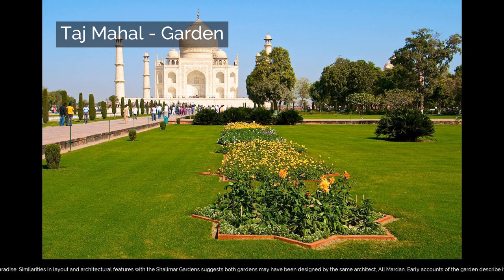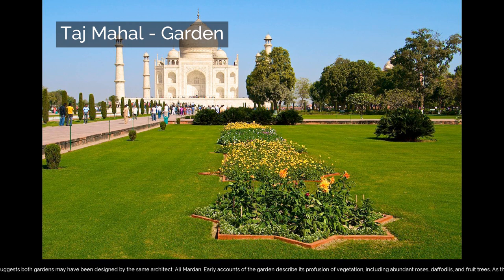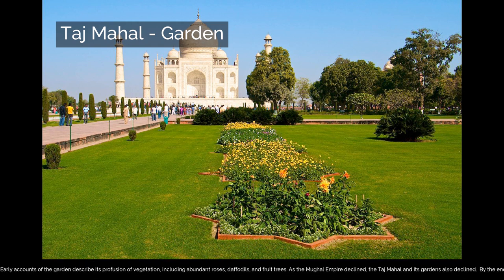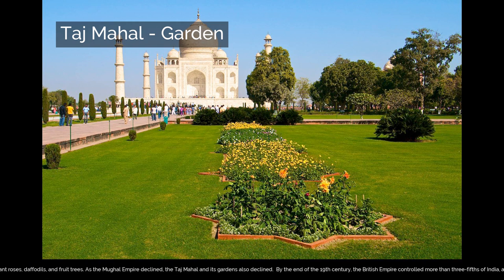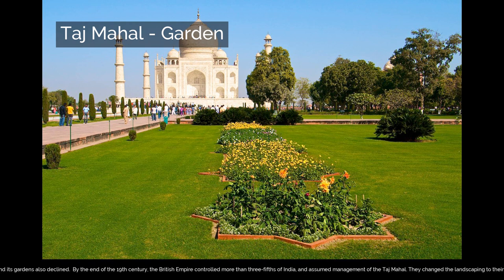Early accounts of the garden describe its profusion of vegetation, including abundant roses, daffodils, and fruit trees. As the Mughal empire declined, the Taj Mahal and its gardens also declined. By the end of the 19th century, the British Empire controlled more than three-fifths of India and assumed management of the Taj Mahal, changing the landscaping to more closely resemble the formal lawns of London.